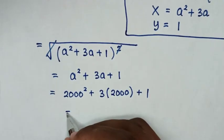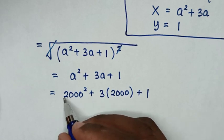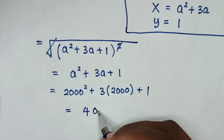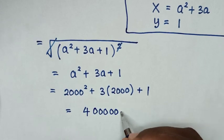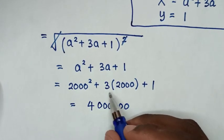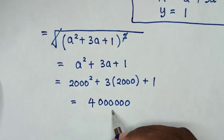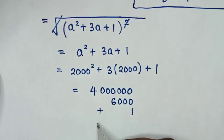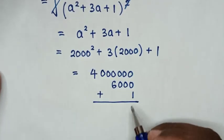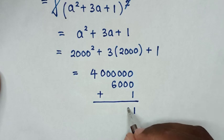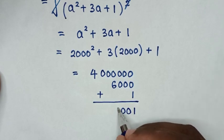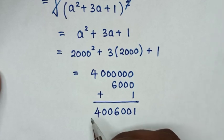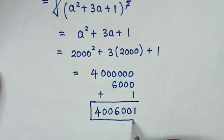In the next step, 2000 squared equals 4,000,000. Then 3 times 2000 equals 6000. Adding these together with plus 1, the final answer is 4,006,001.